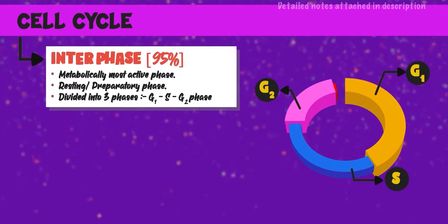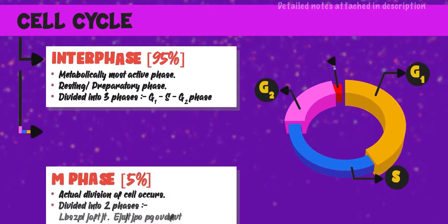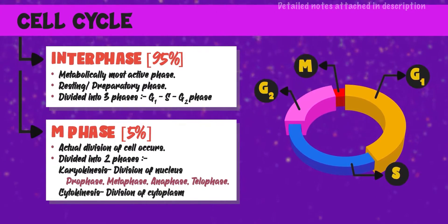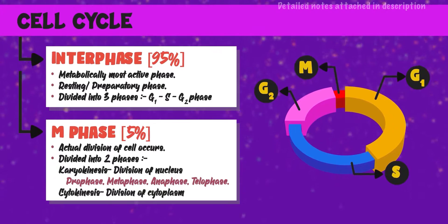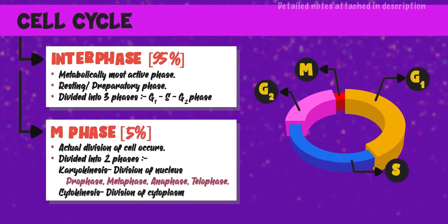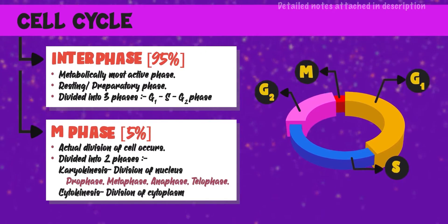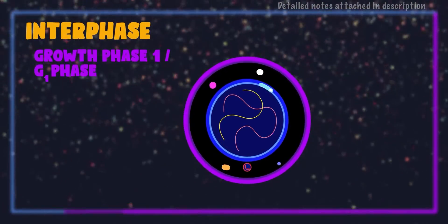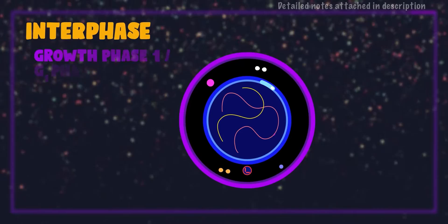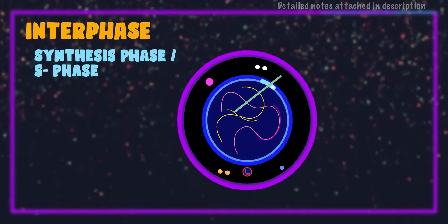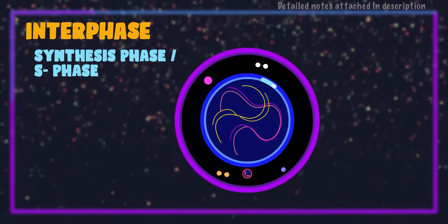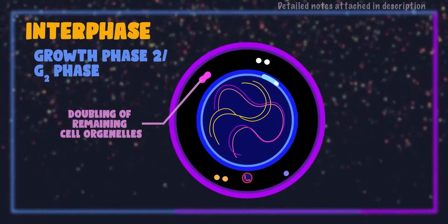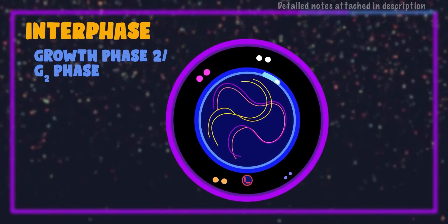The second phase is M phase, during which the actual division of the cell occurs. There are two main events: first is the division of the nucleus called karyokinesis, and second is the division of cytoplasm called cytokinesis. Karyokinesis is further divided into four stages: prophase, metaphase, anaphase, and telophase. The main event of G1 phase is the doubling of most of the cell organelles. The S phase involves replication of DNA, resulting in doubling of the amount of DNA in the parent cell; the centrioles are also doubled during S phase. The G2 phase involves doubling of remaining cell organelles like mitochondria, chloroplasts, and Golgi.